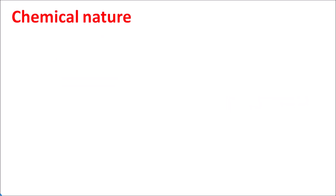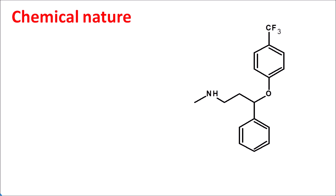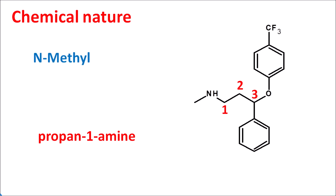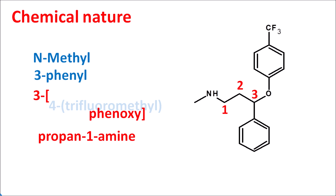Looking at the chemical nature of fluoxetine: the structure contains an amine group as the principal functional group. Numbering the carbon chain gives propan-1-amine as the base. Nitrogen has a methyl group, making it N-methyl. At the third position a phenyl ring is present, giving 3-phenyl, and at the third position another phenyl group is attached through an oxygen giving 3-phenoxy. At the para position of this phenyl group a trifluoromethyl group is present, giving 4-trifluoromethyl. The complete IUPAC name of fluoxetine is thus N-methyl-3-phenyl-3-(4-trifluoromethylphenoxy)propan-1-amine.